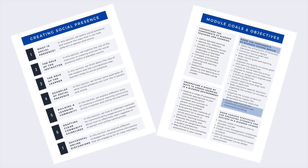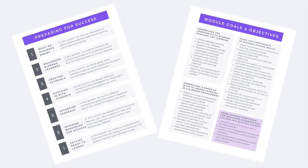Module 6 is all about creating social presence, as we consider different ways for implementing community both in-person and online to strengthen relationship building. In the final module of the course, we review a range of strategies that can help prepare students for success in a blended course environment.